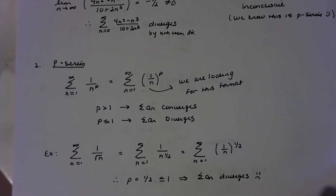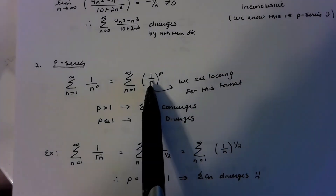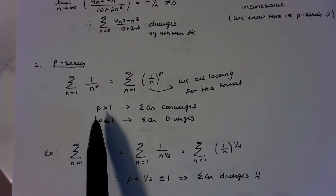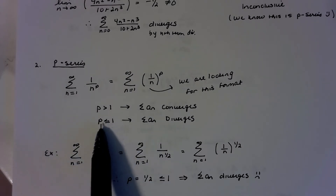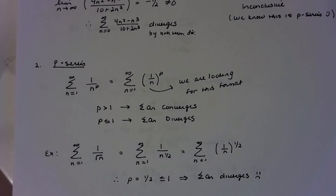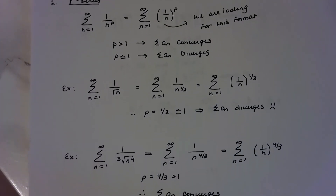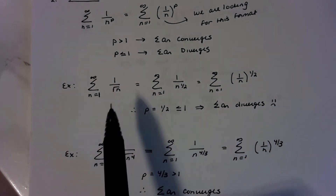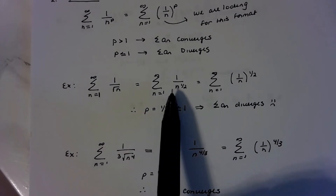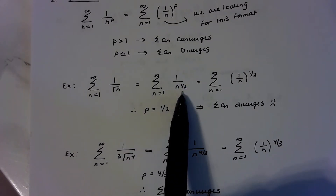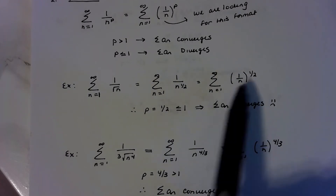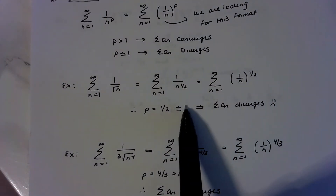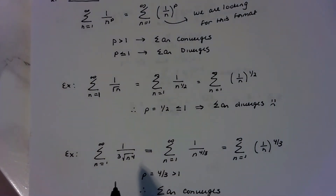P-series. What you're looking for is to be able to write something of the form 1 over n to the p. If p is greater than 1, then the series will converge. If it's less than or equal to 1, then it's going to diverge. For example: 1 over root n can be rewritten as 1 over n to the one half, so p equals one half. Since it's less than or equal to 1, this series diverges.